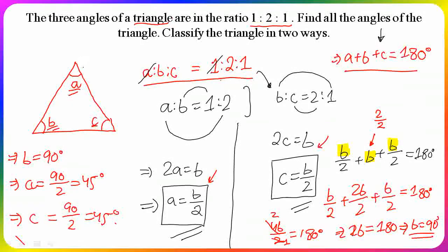So A is 45 degrees, B is 90 degrees, and C is 45 degrees.